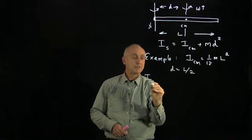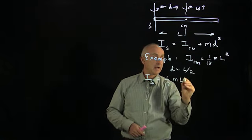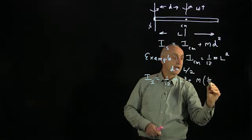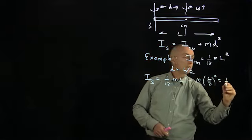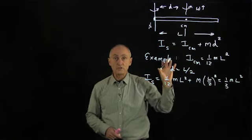And so I about the end axis is 1/12 mL² plus the mass times L over 2 squared. And 1/12 plus 1/4 is 1/3 mL².